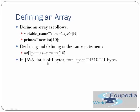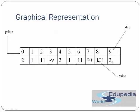In Java, int is 4 bytes, so the total space taken by this array is 4×10 = 40 bytes. The graphical representation of the array shows the indexes on top — the array starts at index 0 and goes up to the size you define. You can store positive or negative integer values if you have created an array of int.